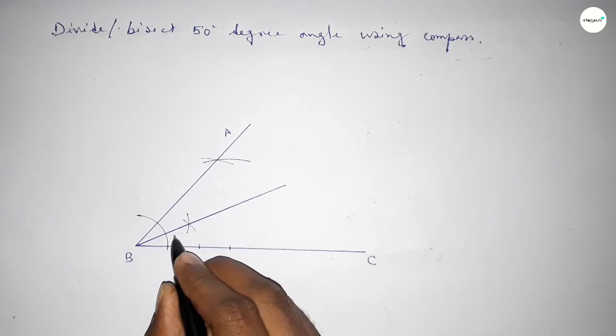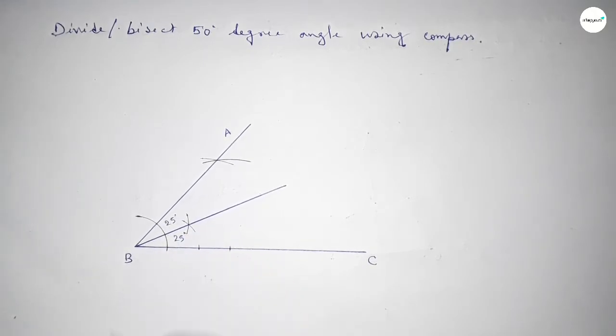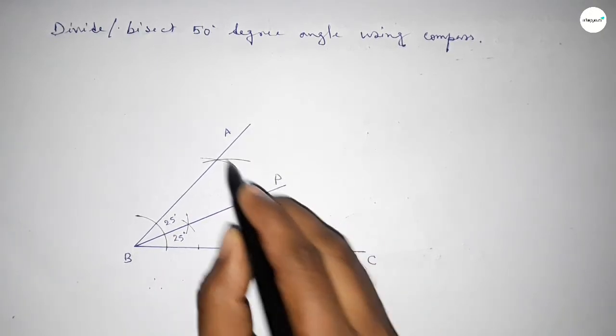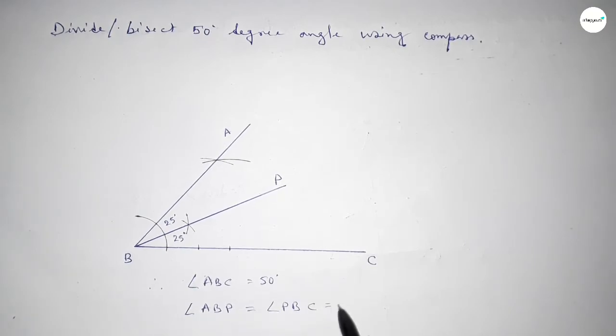Therefore, angle ABC equals 50 degrees, and angle ABP equals angle PBC equals 25 degrees. That's all, thanks for watching. Please share it with your friends.